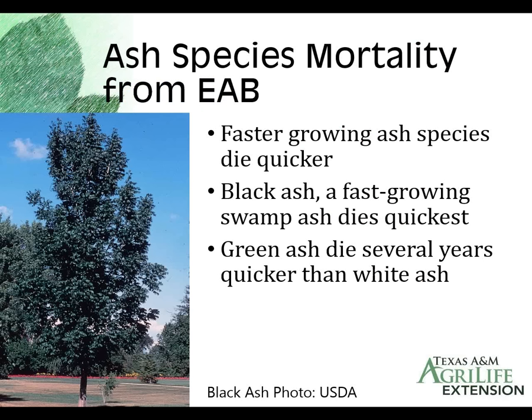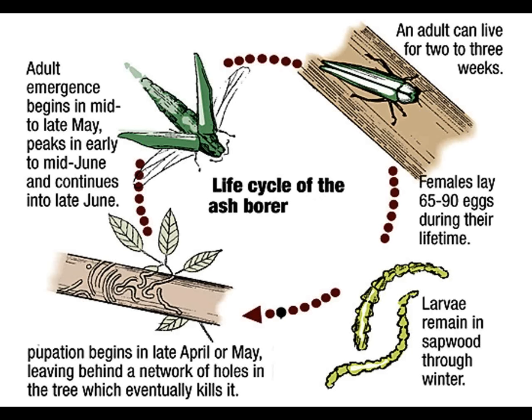Not all ash trees are equally damaged by emerald ash borer — it seems to kill faster-growing species more quickly. Black ash is a fast-growing species and appears to die the quickest. Green ash typically dies within one to three years, but it dies much faster than white ash, which is a little more naturally tolerant of the borer. So there are meaningful species differences among ash types.